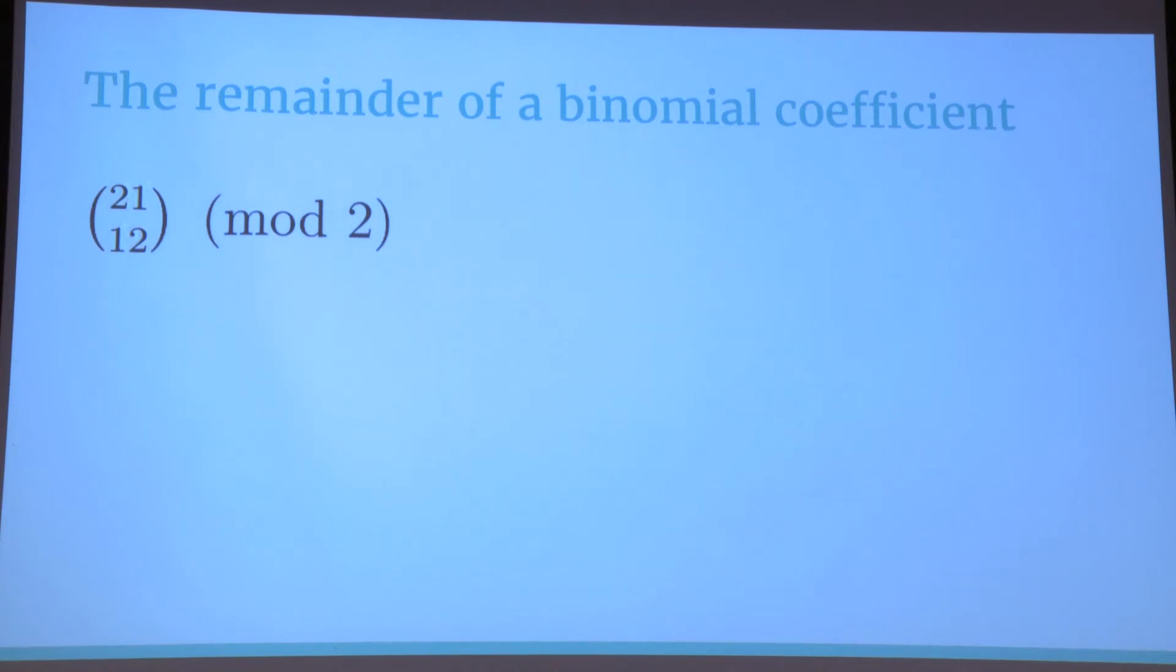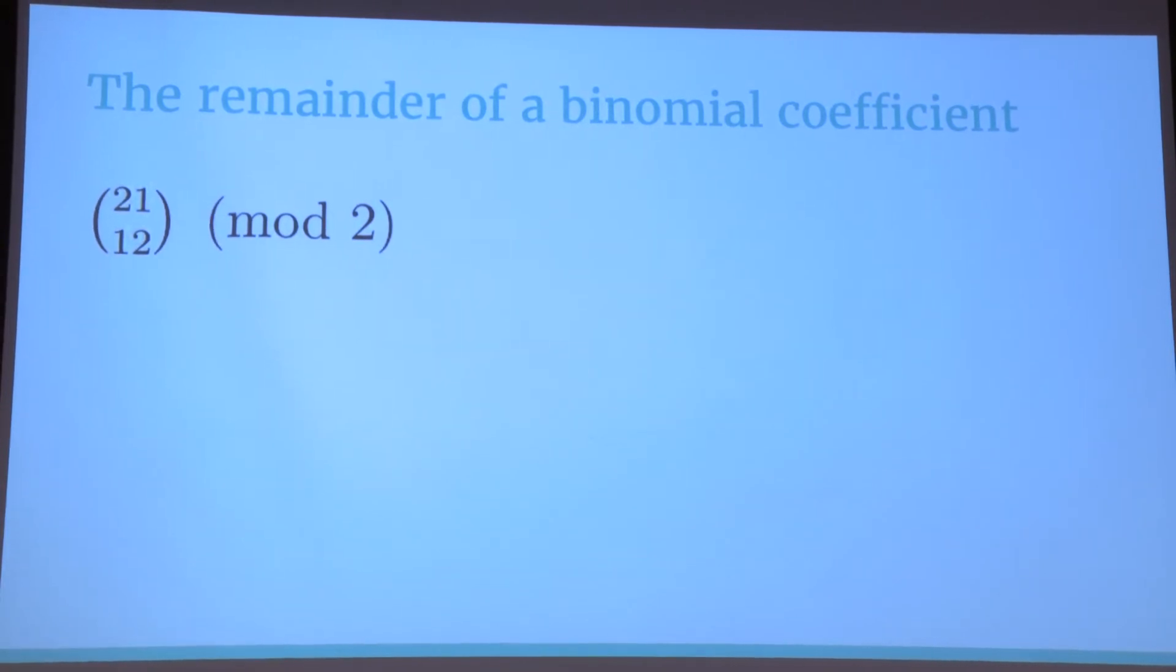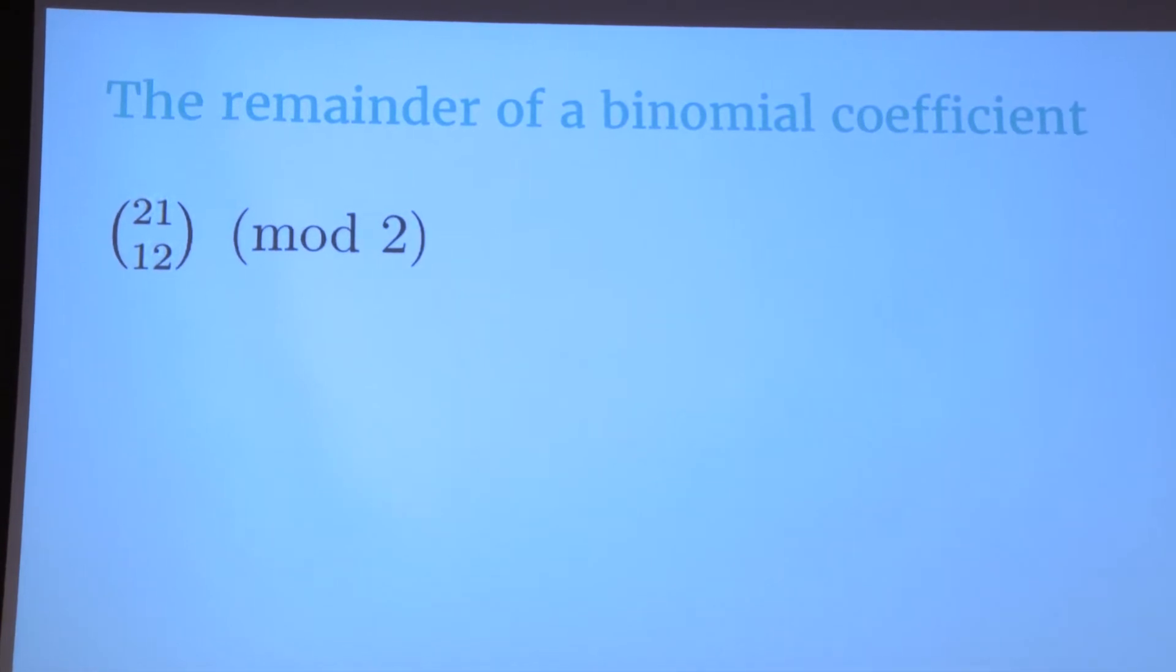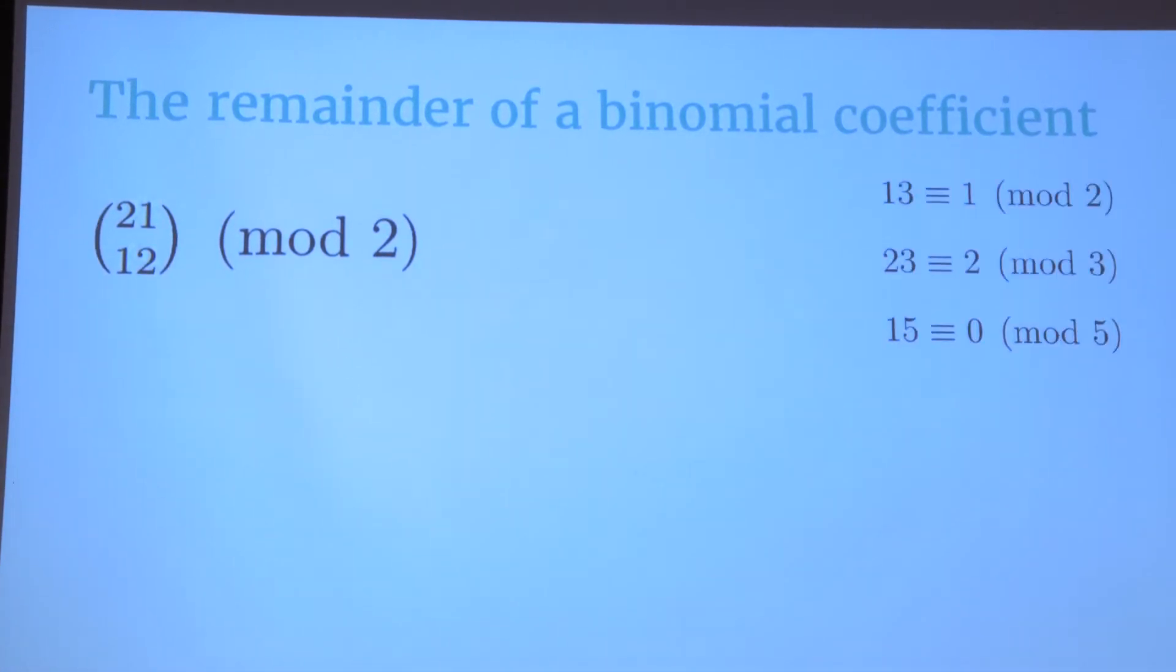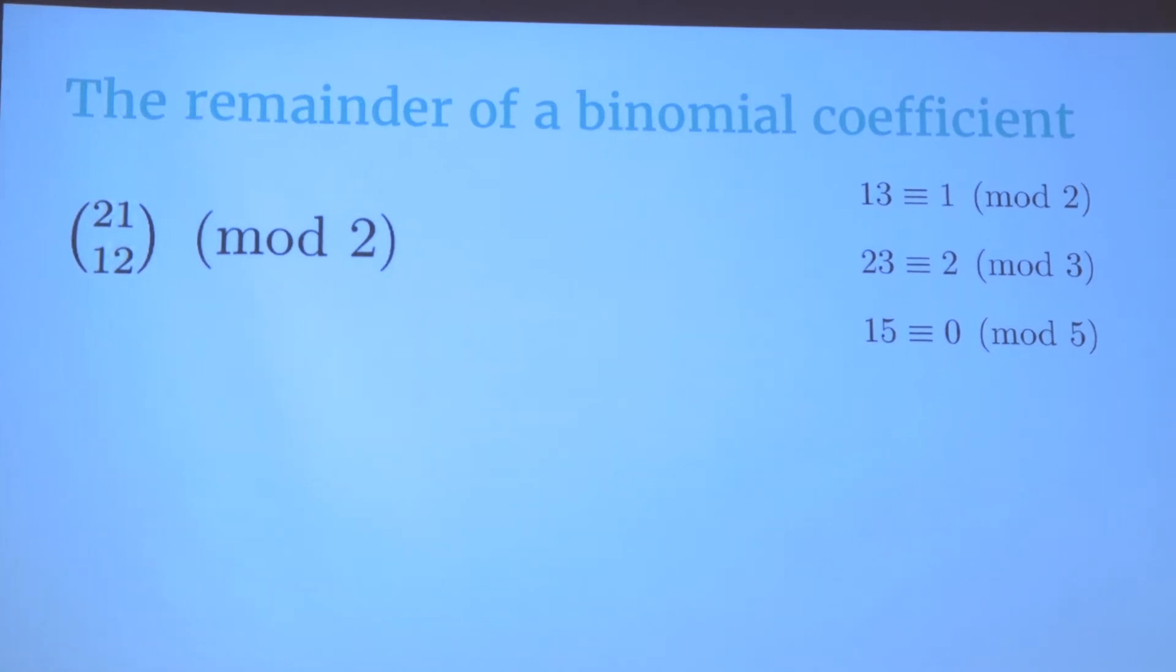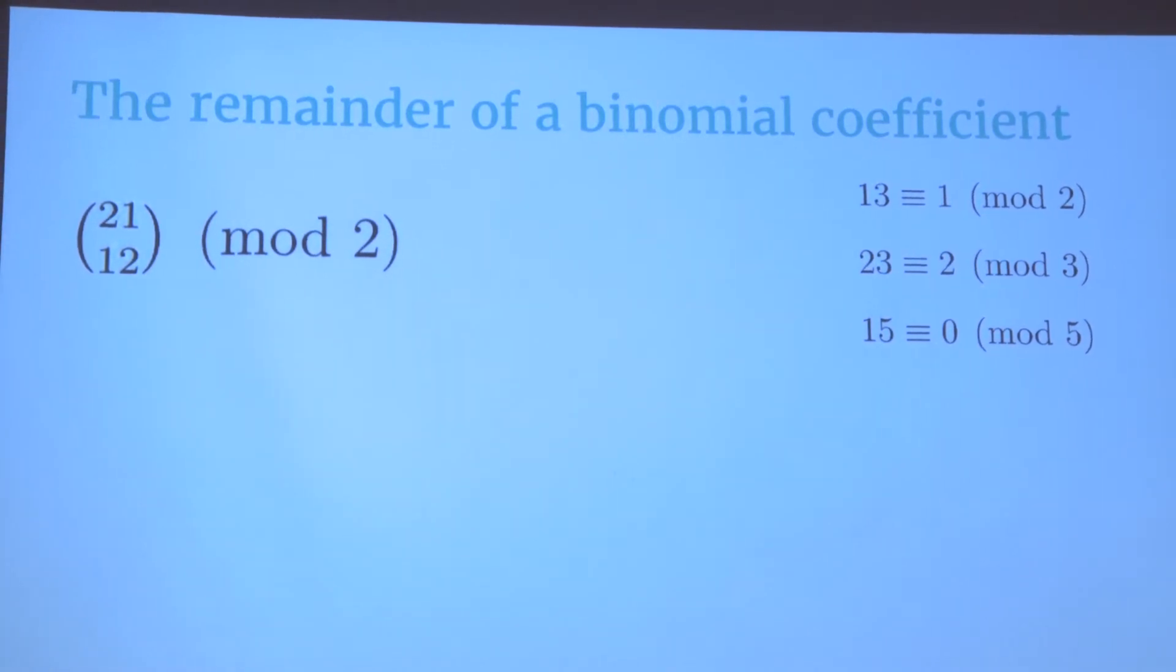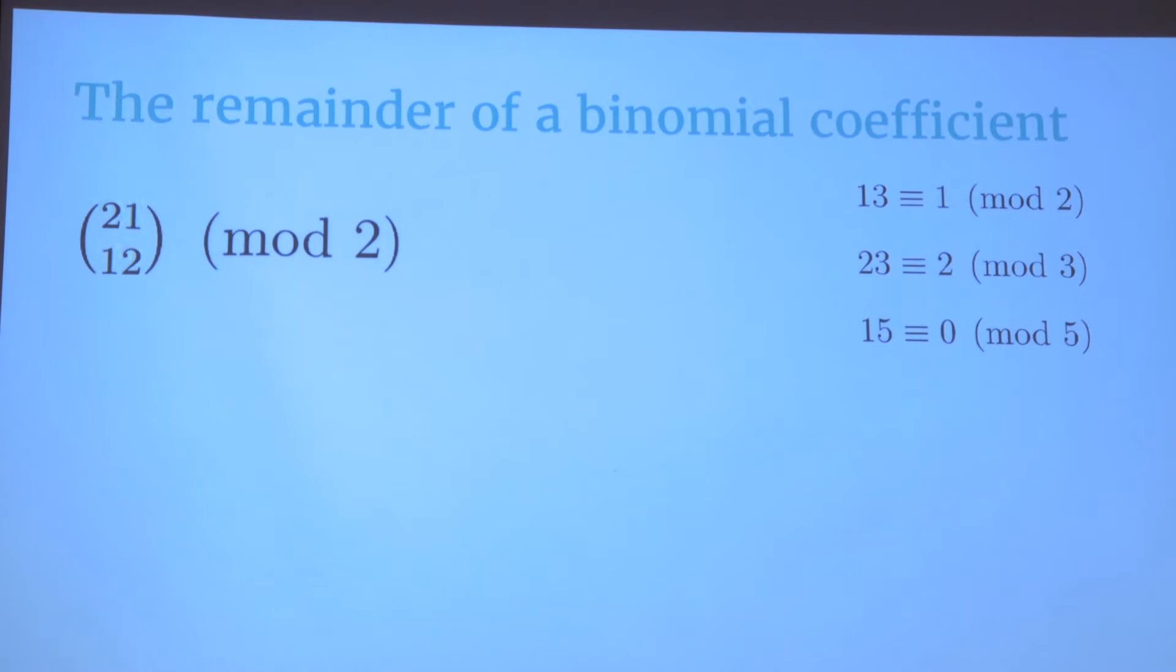We're looking at the remainder for when we divide a binomial coefficient by a prime p. Say we want to know which is the remainder when we divide 21 choose 12 by 2. Just a little notation thing. When we say that 15 is congruent to 0 modulo 5, it means that when we divide 15 by 5, the remainder is 0, and therefore 15 is a multiple of 5.